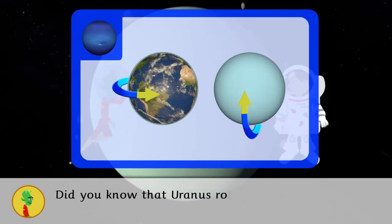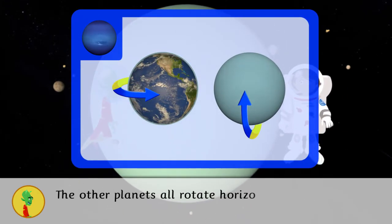Did you know that Uranus rotates vertically? The other planets all rotate horizontally.